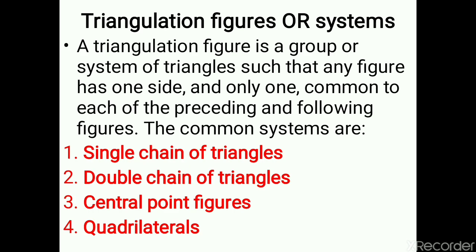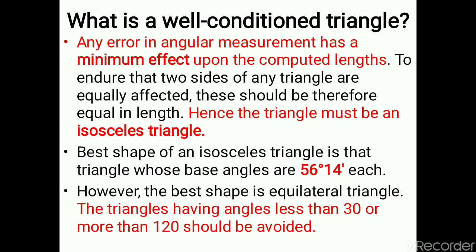We have the classification of triangulation systems: first order, second order, and third order. Different types of triangulation figures include single chain of triangles, double chain of triangles, central point figures, and quadrilaterals. Today we will move further with strength of figure, but first we will understand the very important term — a well-conditioned triangle.